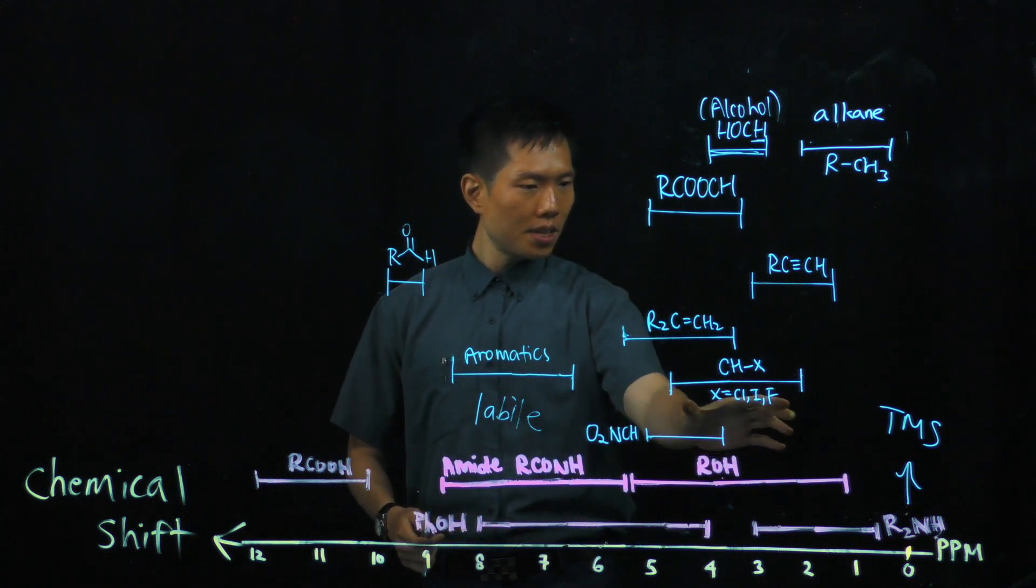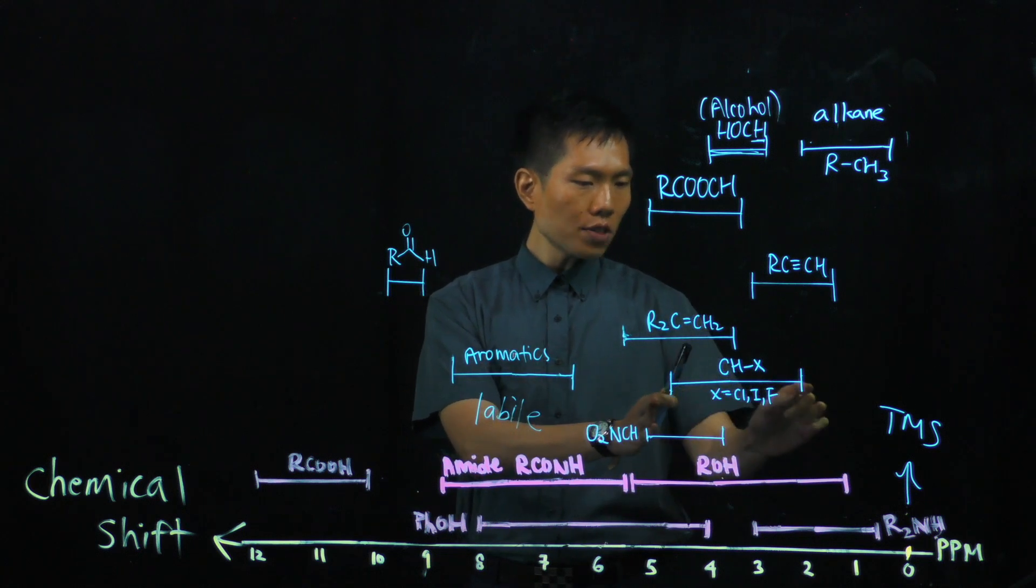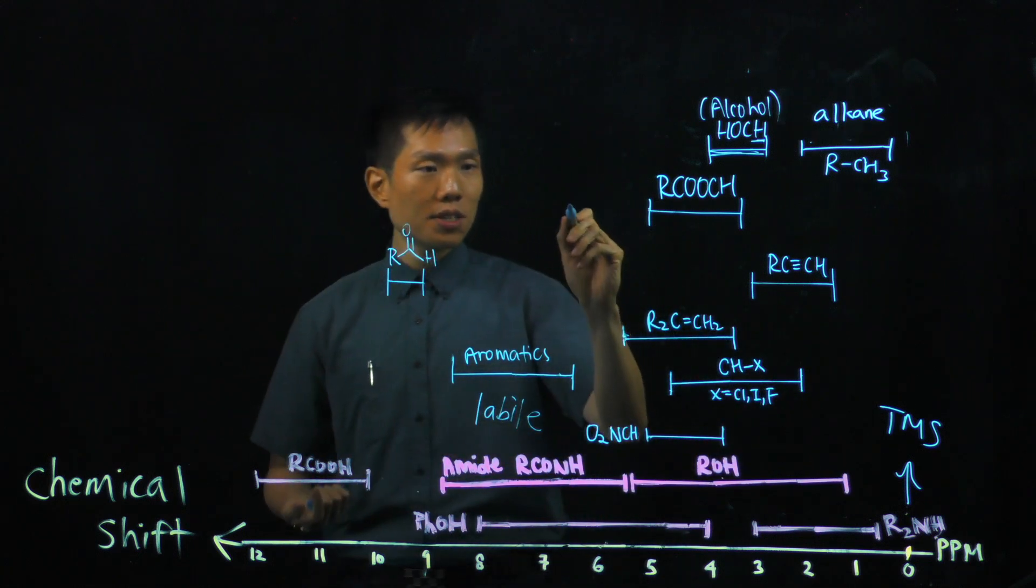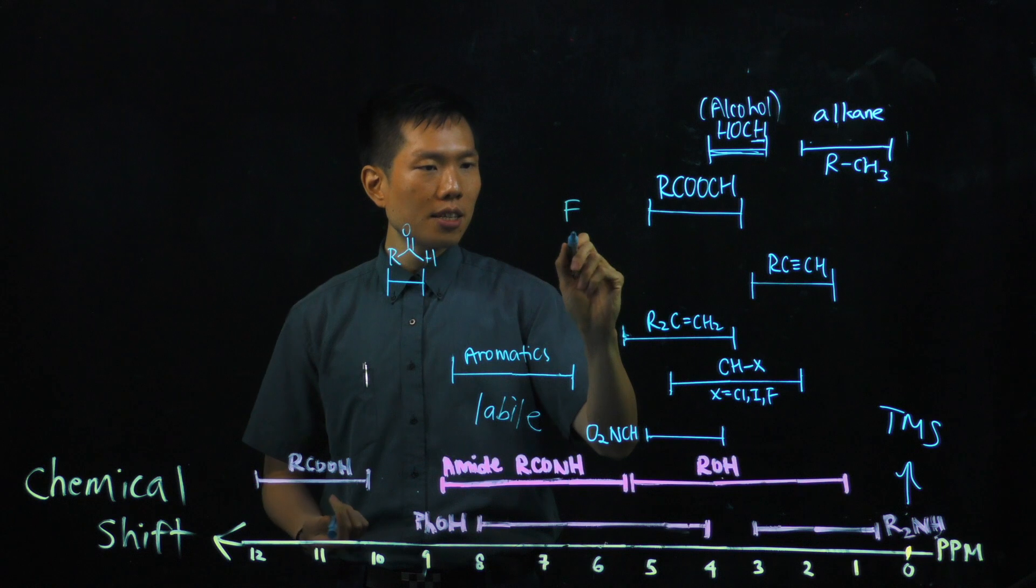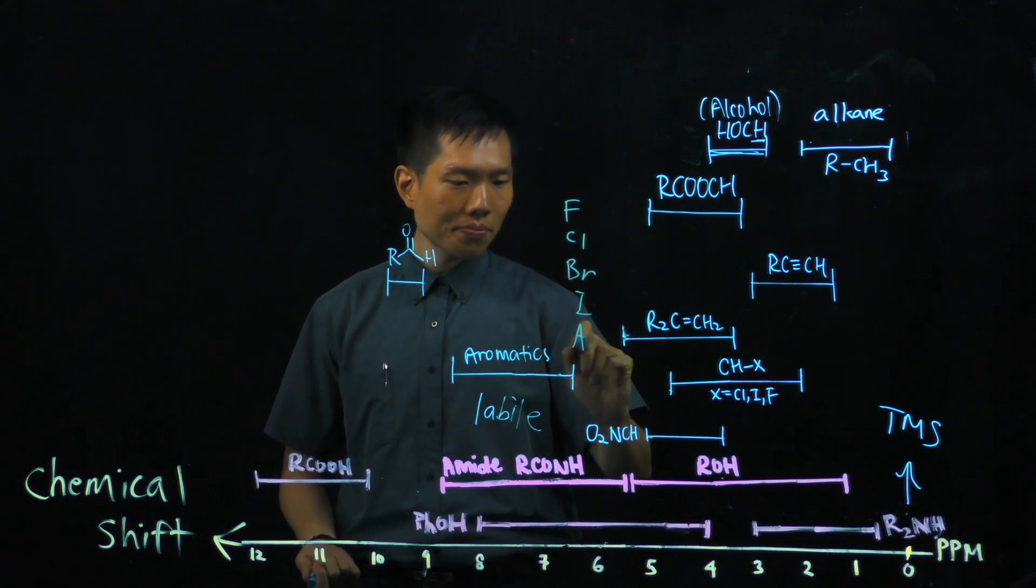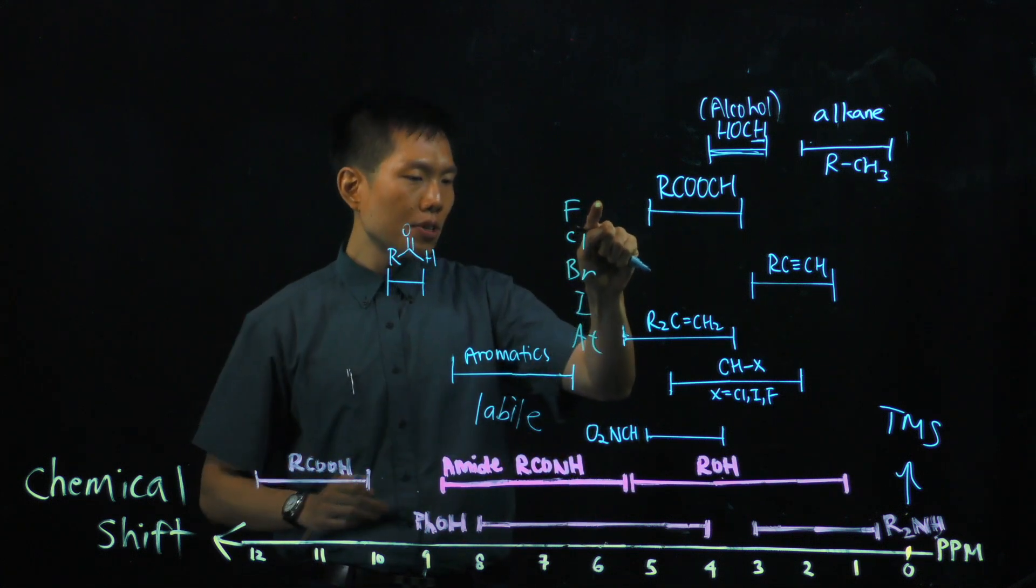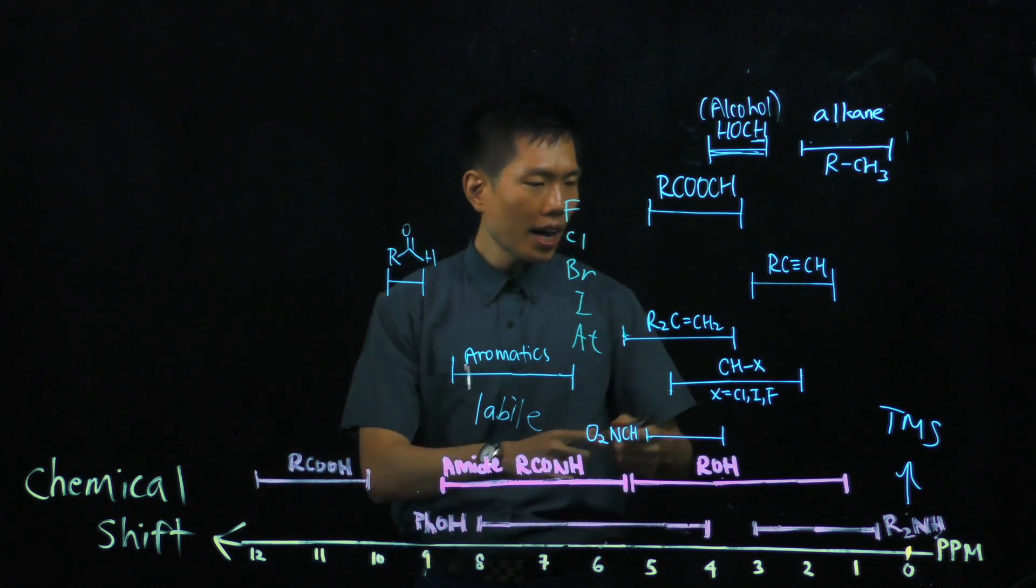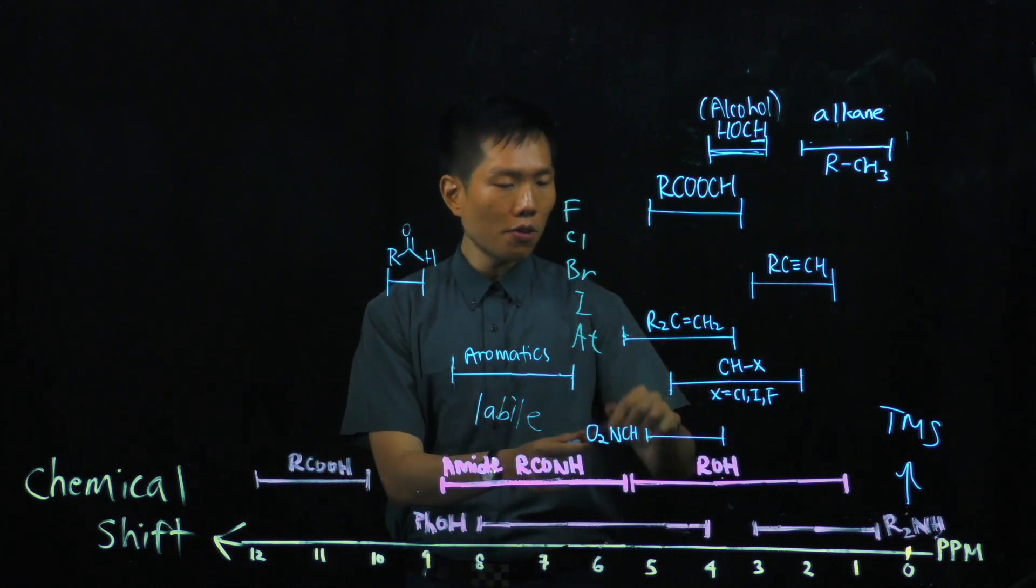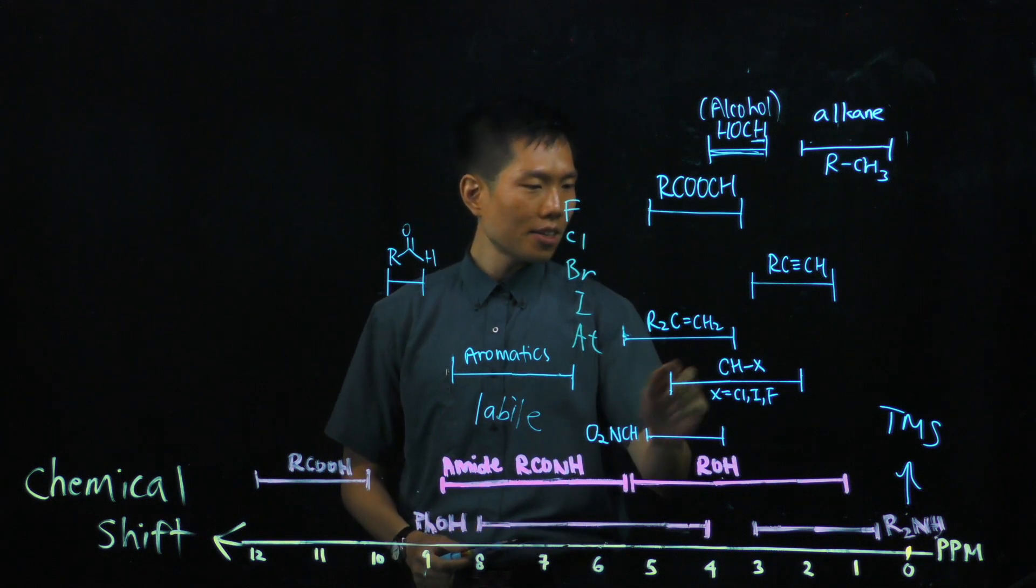And the next piece will be the halogens. So you see a broad range for the halogens because in the halogen series, coming from the top, you have fluorine, chlorine, bromine, then iodine. If you need to go one more down, it's astatine. And the electronegativity will decrease down the group. And hence, you'll find that the signal very close to the fluorine will be more downfield. If you have an astatine nearby, there'll be more upfield.